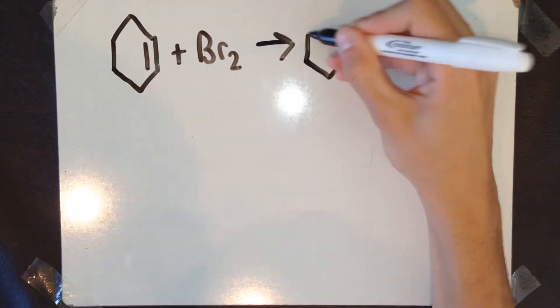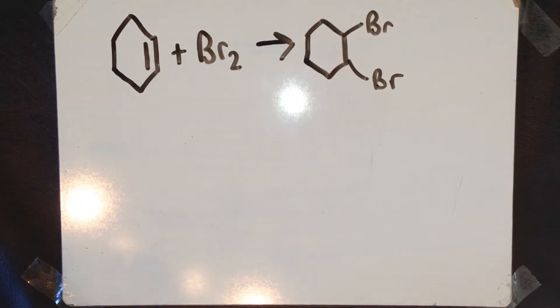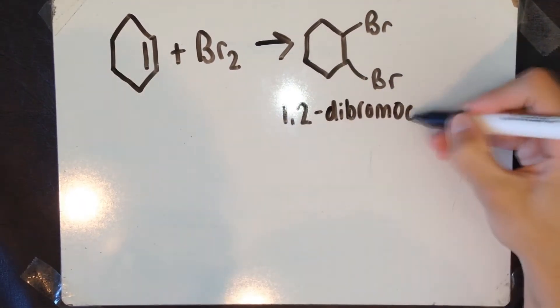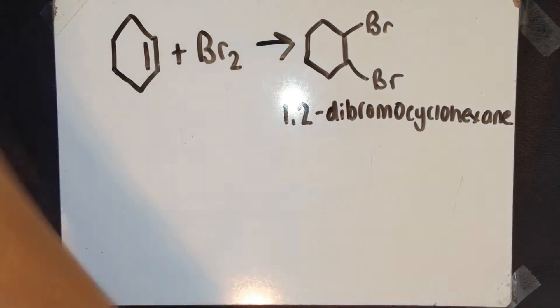I'm going to start off with something we all know. Cyclohexene and bromine. The double bond breaks, the bromine molecules join, and you're left with 1,2-dibromocyclohexane.